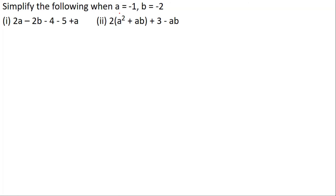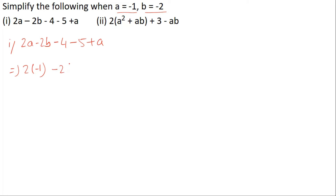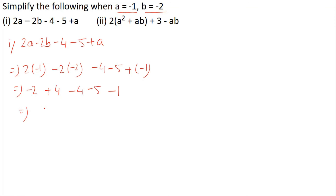Next: simplify the following when a equals minus 1 and b equals minus 2. Number 1 is 2a minus 2b minus 4 plus minus 5 plus a. Putting in the values: 2 into minus 1, minus 2 into minus 2, minus 4, minus 5, plus minus 1. That gives minus 2 plus 4 minus 4 minus 5 minus 1. When you solve it, the answer is minus 8.